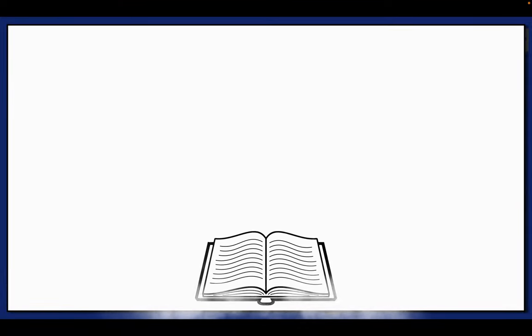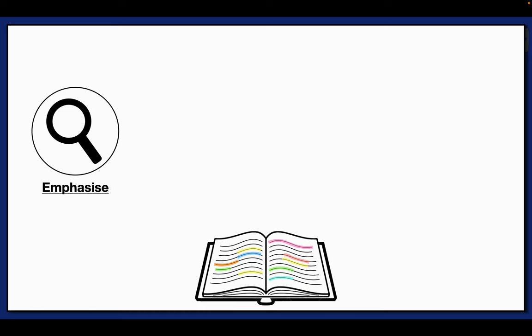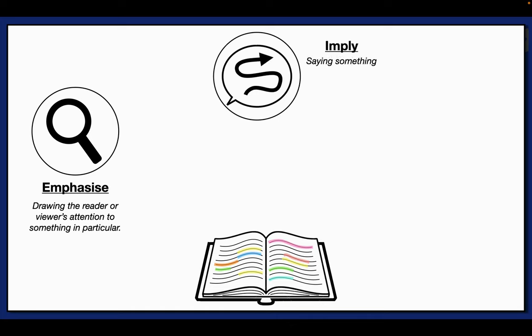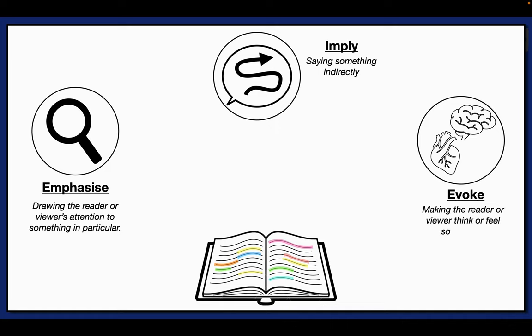So, as we approach a text with this new understanding that everything is a choice, and that those choices should be deconstructed and analyzed, we can begin. As we read, we might identify several choices, but identification is not the same as analysis. So what do we do next? We need to ask ourselves what effects do these choices have? A choice might emphasize something, which is to say that this choice draws the reader's or viewer's attention to particular things. Or a choice could imply something, which is to say that it says something indirectly. Or a choice could evoke something, which means it causes the reader to think of something in particular or have a specific feeling.